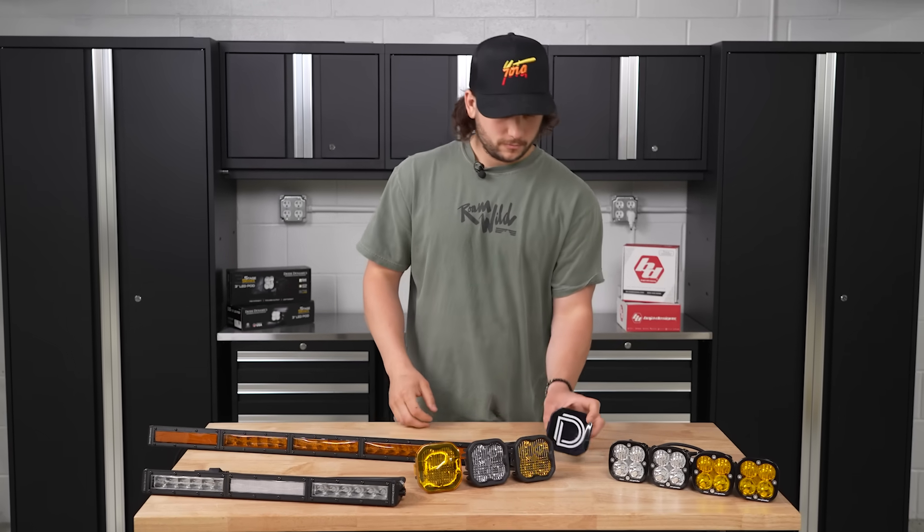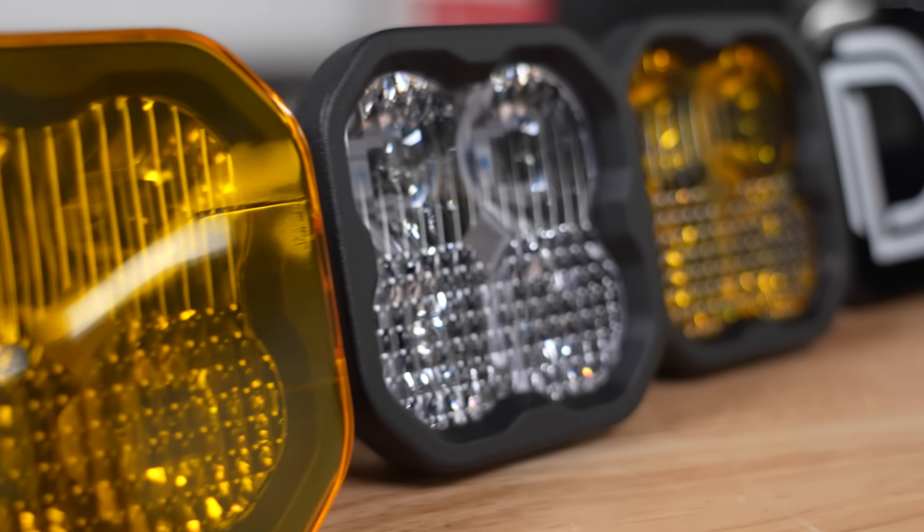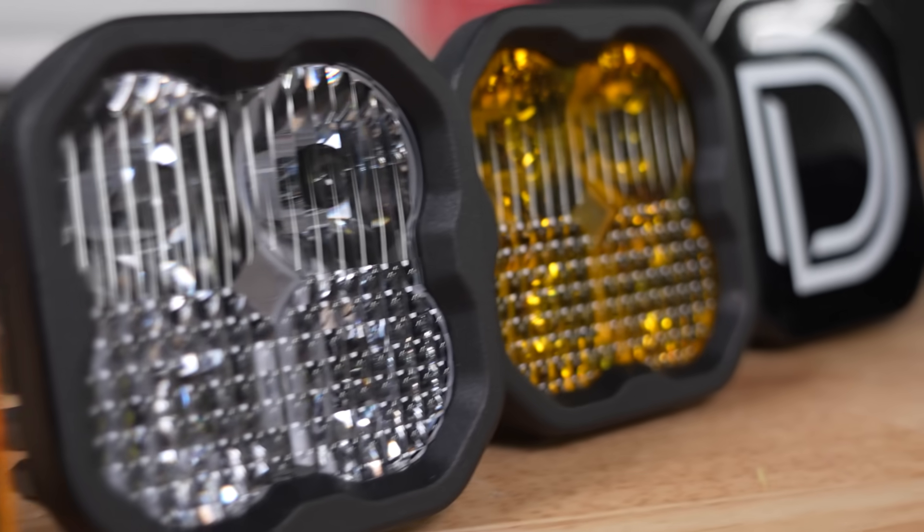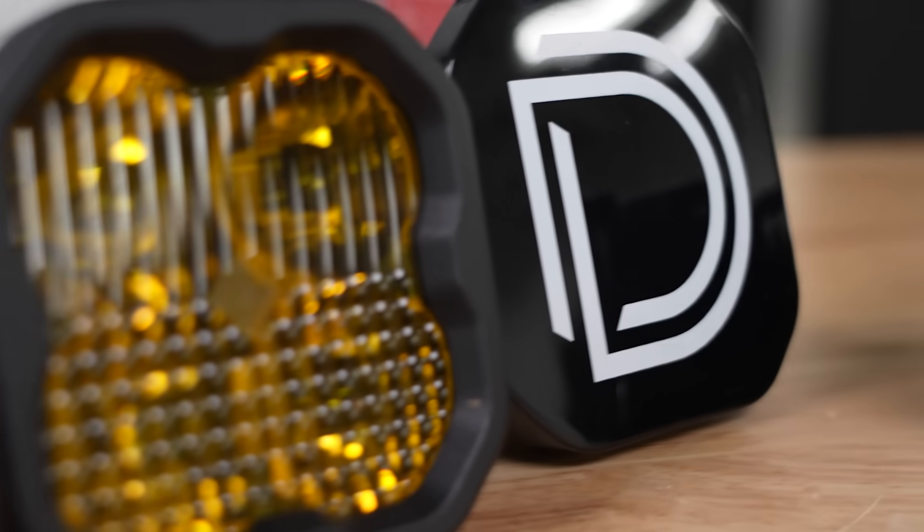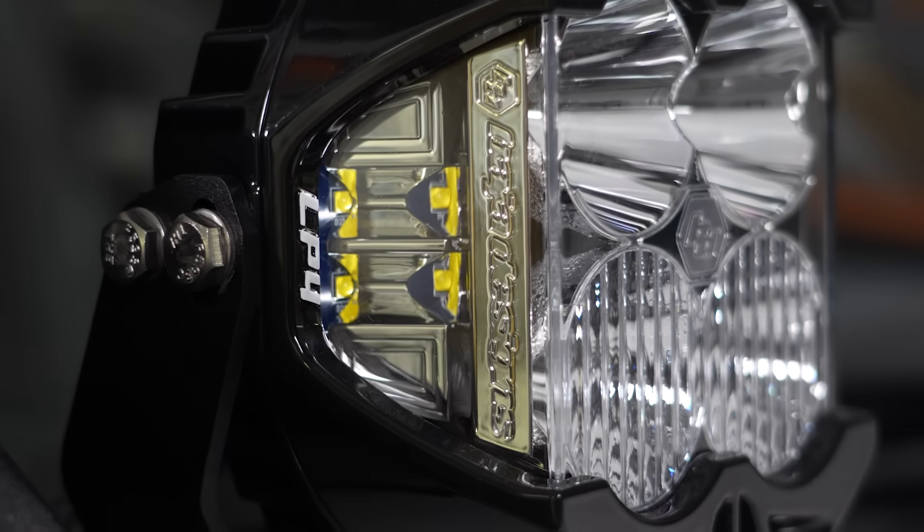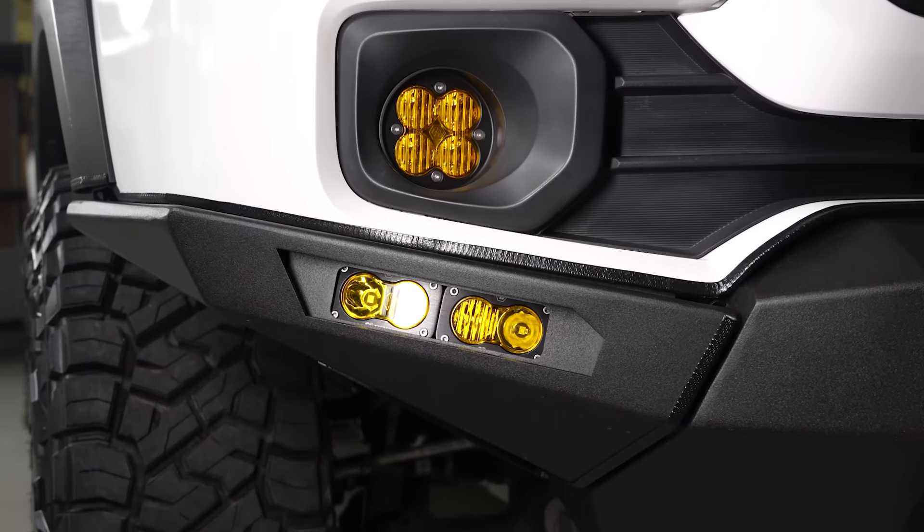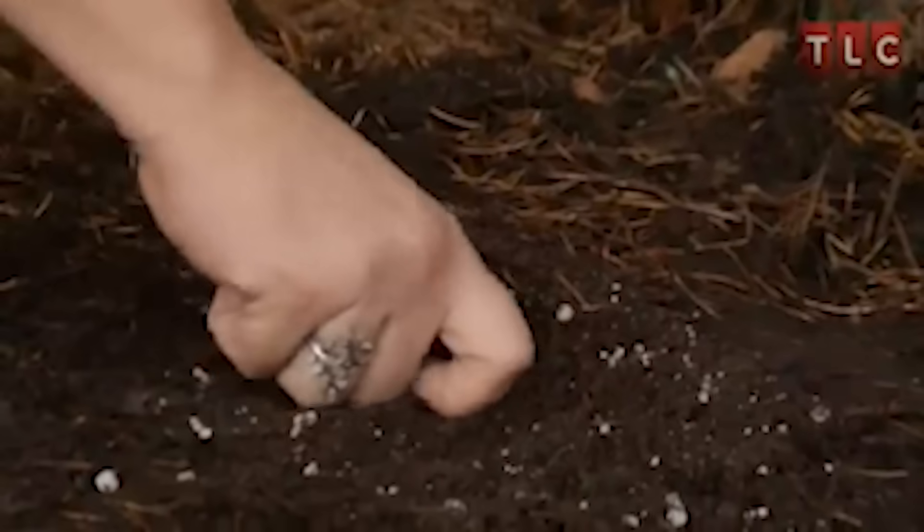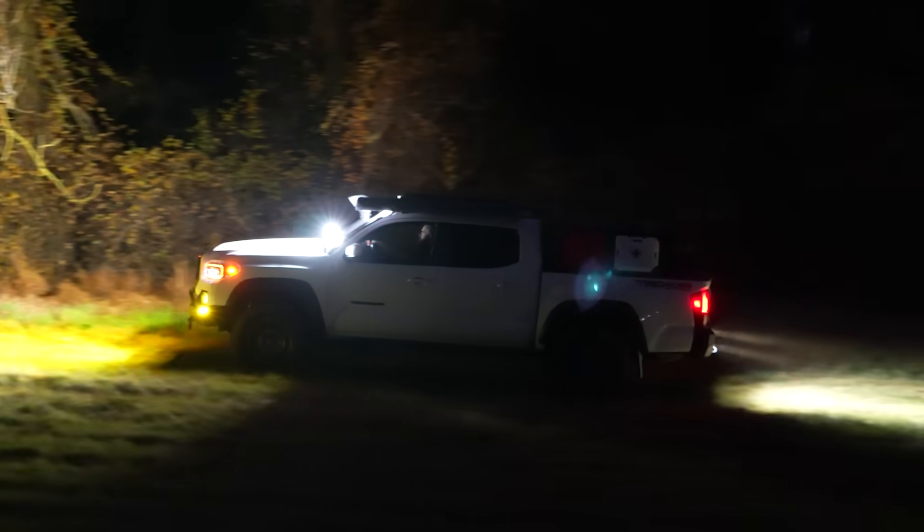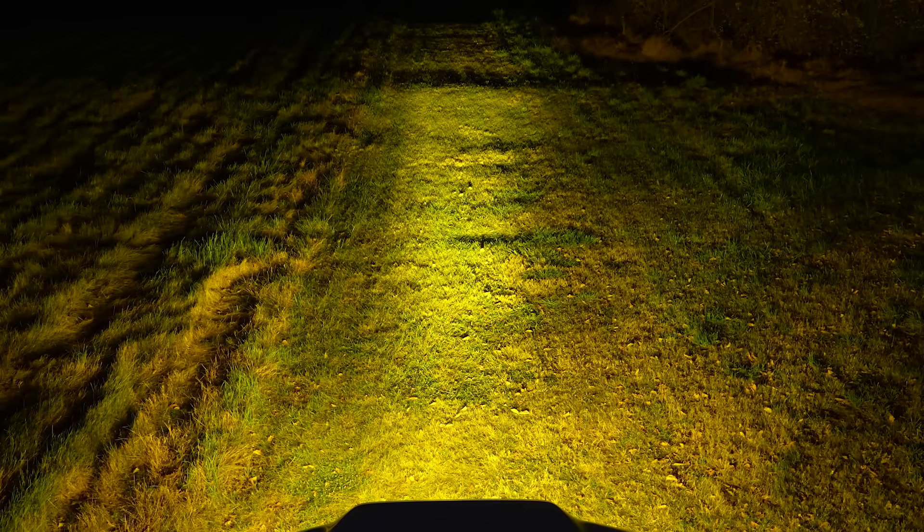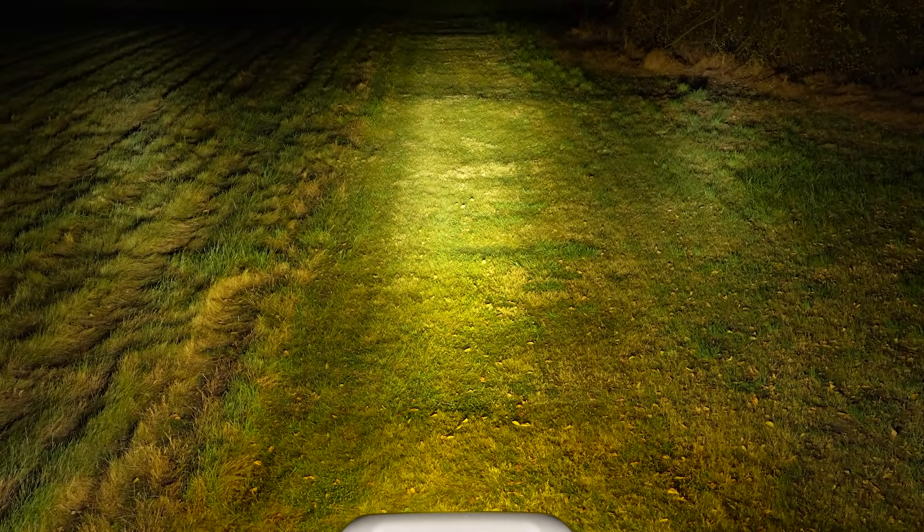So when should you use each light? Use white lights when visibility is good and you want to see far and wide - in the desert, open forest roads, high-speed trail runs, detailed views of rocks, branches, and trail hazards. Use yellow lights when it's foggy, rainy, snowy, dusty, or all of the above, or when you're following another rig and eating their dust cloud for 12 miles straight. Don't be afraid to mix and match. White spots for long distance, yellow floods or fogs for short range and low visibility. This hybrid setup gives you the best of both worlds. It's like having tacos and nachos in the same meal.